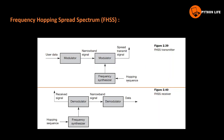Now let's look at the FHSS diagram. The transmitter is the sender side and FHSS receiver is the receiver side. The user data is modulated into narrow band signals. The narrow band signals are then modulated with a frequency synthesizer, and a hopping sequence is generated as a spread spectrum signal.